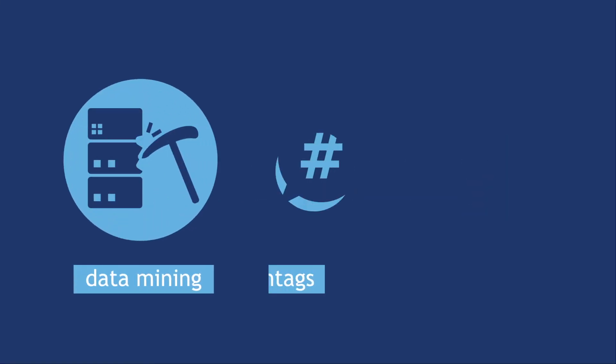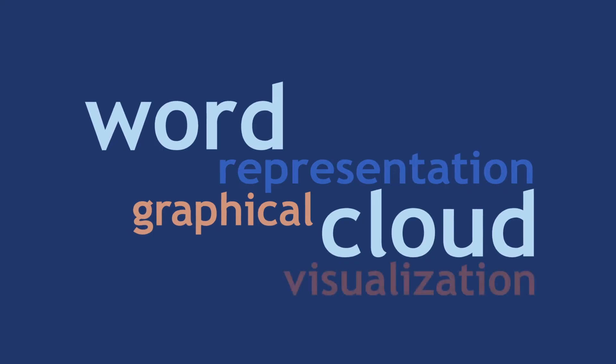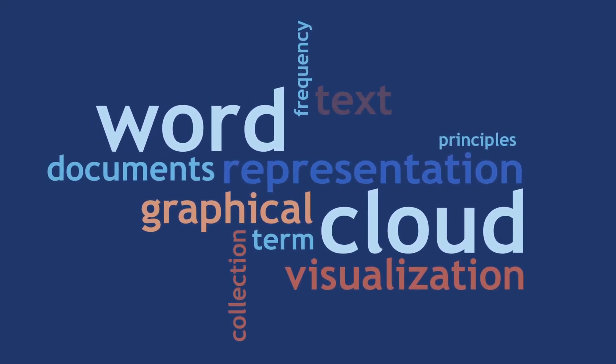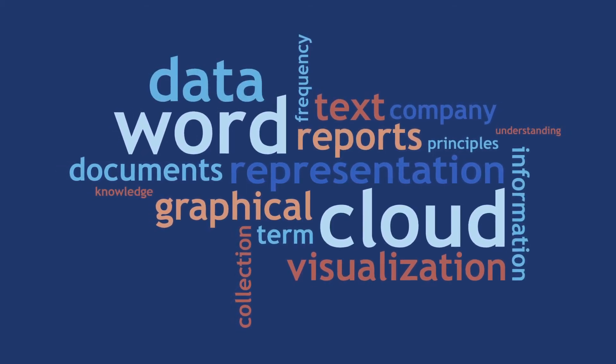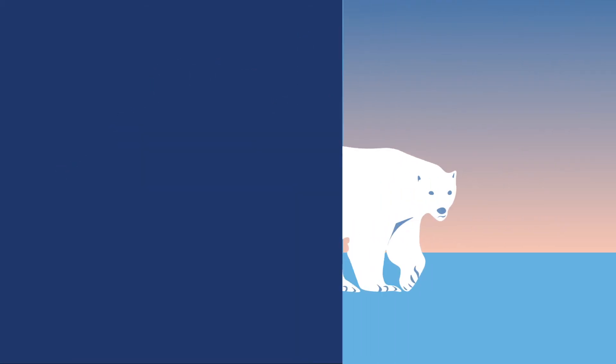A folksonomy shares features of both a lexicon and a taxonomy, but is not as deeply structured as a taxonomy. The primary identifier of a folksonomy is that it is created organically through crowdsourcing metadata about a knowledge domain, usually by data mining hashtags or word counts. One type of folksonomy is a word cloud, a graphical representation of the frequency a term appears in some collection of text. The more frequent the term, the larger it appears in the graphic.